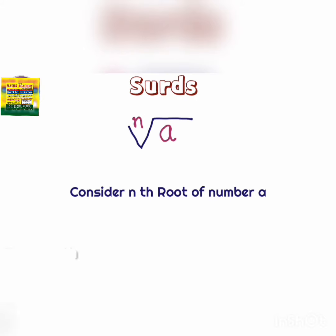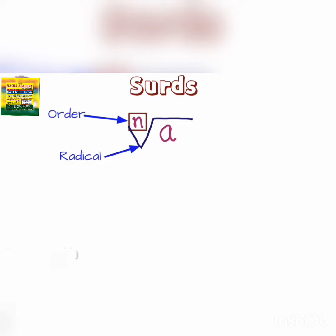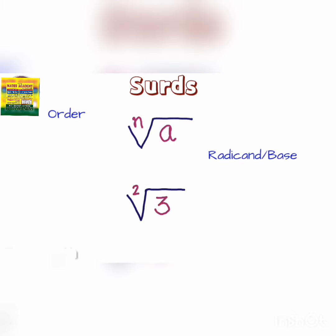Under the nth root of A, where n is called as an order, the root sign is called as a radical sign, and a number under the radical sign is called as radicand or base. In the square root of 3, 2 is the order and 3 is the radicand or base.